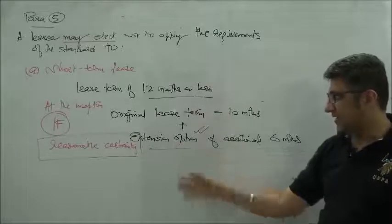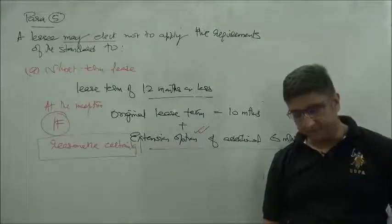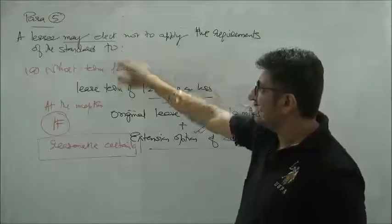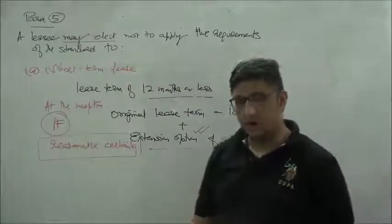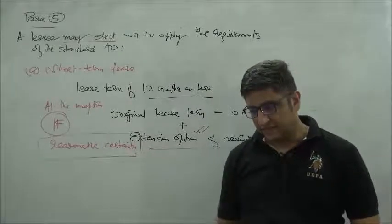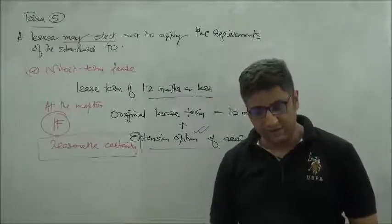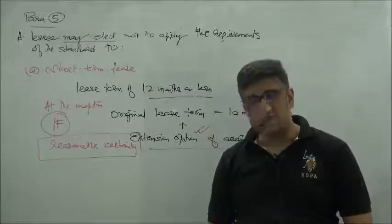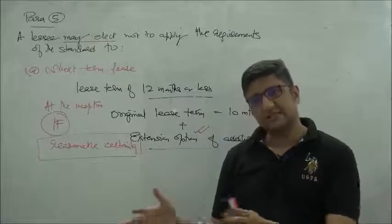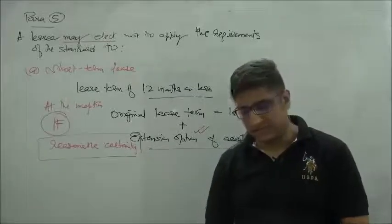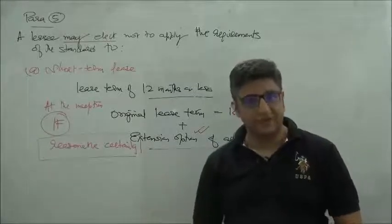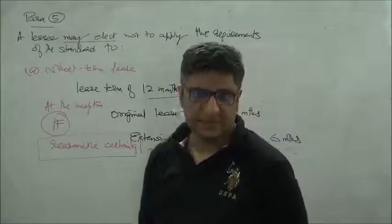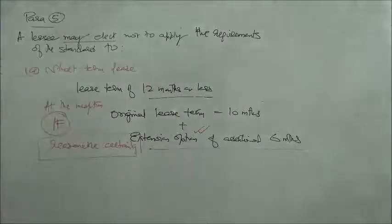One reason this exemption was optional was so people could still apply the new standard's requirements—showing the right-of-use asset and lease liability in the balance sheet—but having said that, for cost-benefit analysis, this exemption exists.